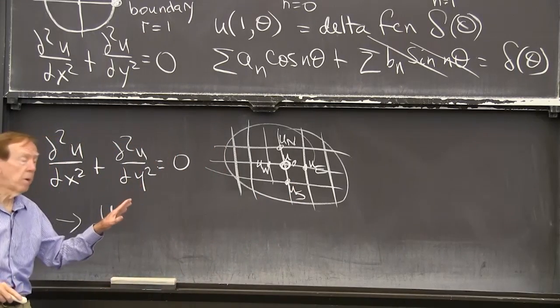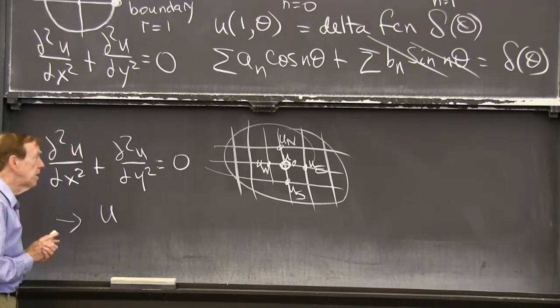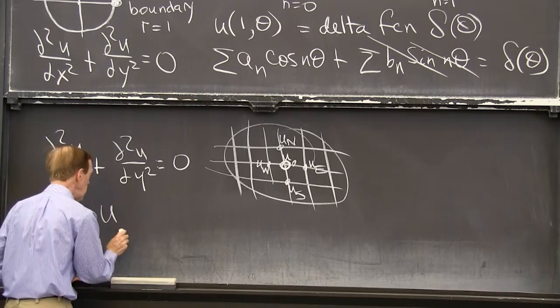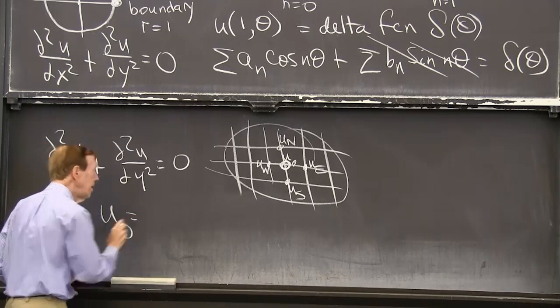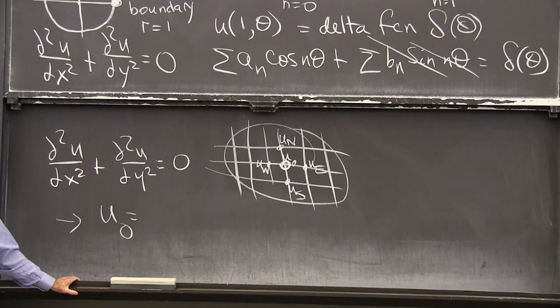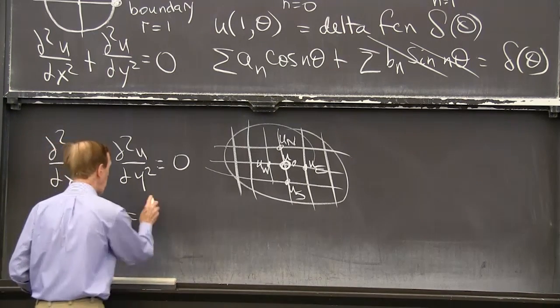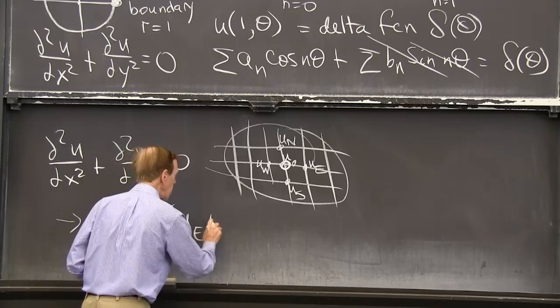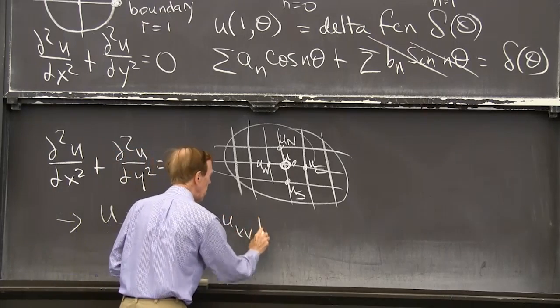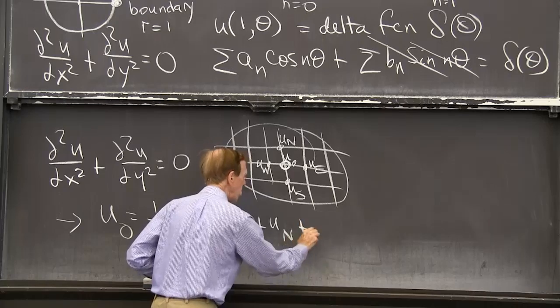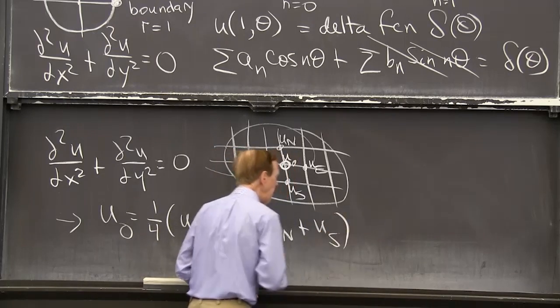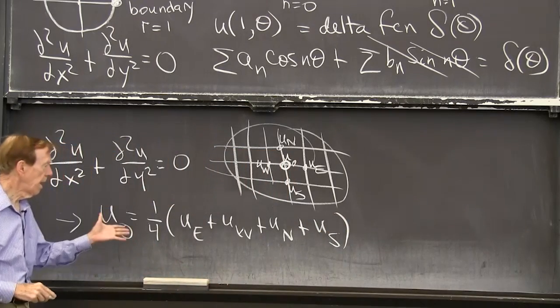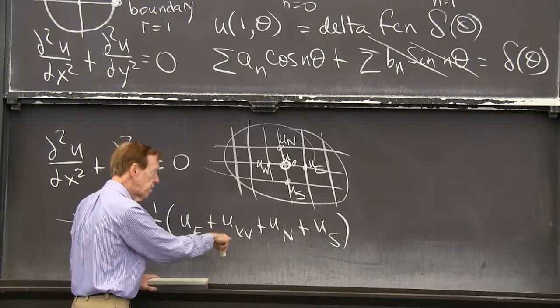Say u_0 at the center, with u east maybe, u west, u north, and u south. So we have an equation, and I want to write that equation down. u center is, it's just going to be the average. It's just going to be 1 quarter of u east, u west, u north, and u south. So that'll be true. That equation will hold.